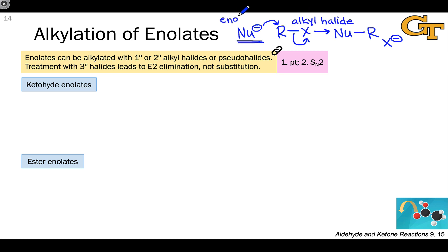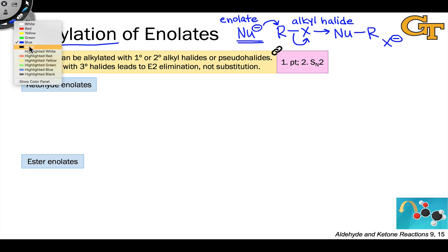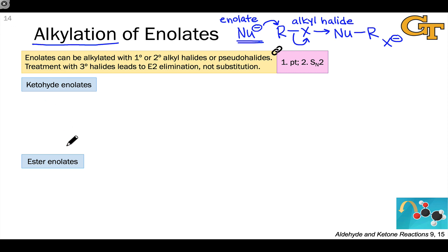When we combine a nucleophilic enolate with an electrophilic alkyl halide or pseudohalide, the potential is there for nucleophilic substitution by the enolate, which from the enolate's perspective amounts to an alkylation process — the installation of an alkyl group on the nucleophilic enolate. This seems very appealing because our nucleophile is carbon-based and the electrophile is carbon-based, so this is a strategy for the formation of carbon-carbon bonds. However, there are a few subtleties to consider.